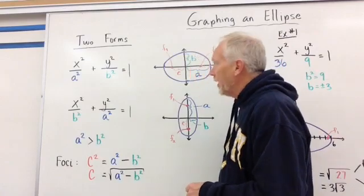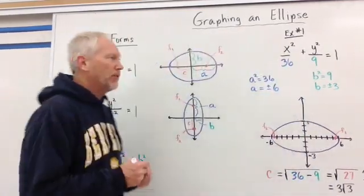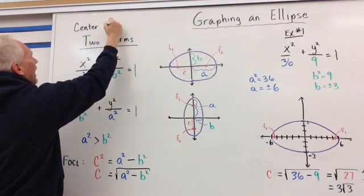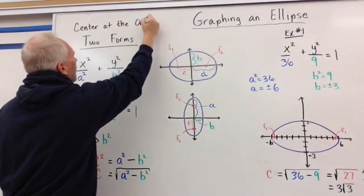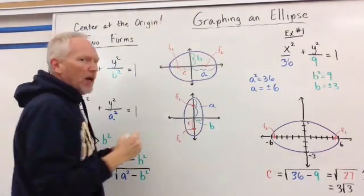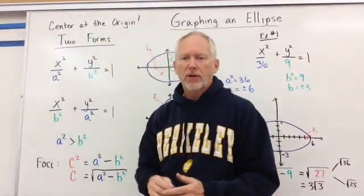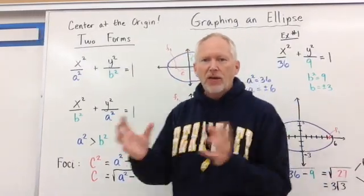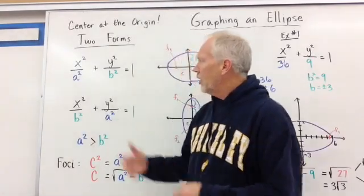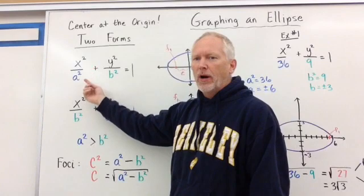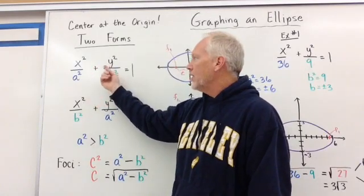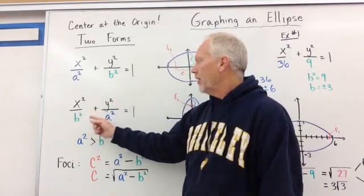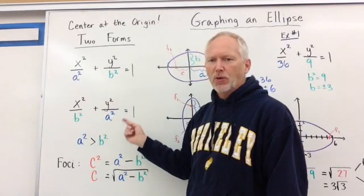We should make a note that these two forms are both centered at the origin, meaning centered at (0, 0). That's the origin, so there is no shift in either the X or the Y direction. So let's look at the two general forms: x² over a² plus y² over b² equals 1, and then x² over b² plus y² over a² equals 1.